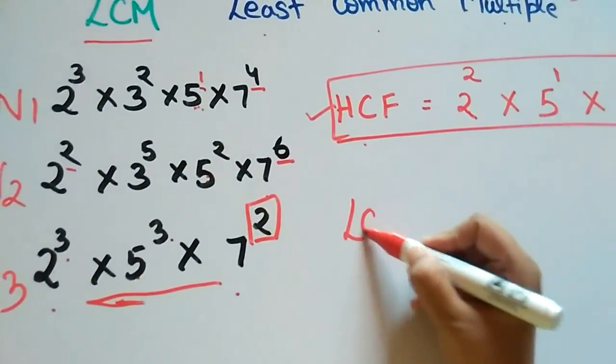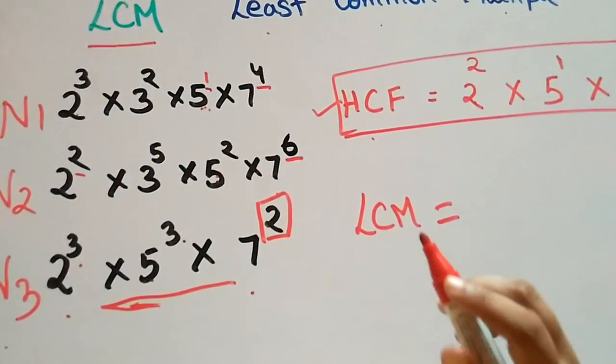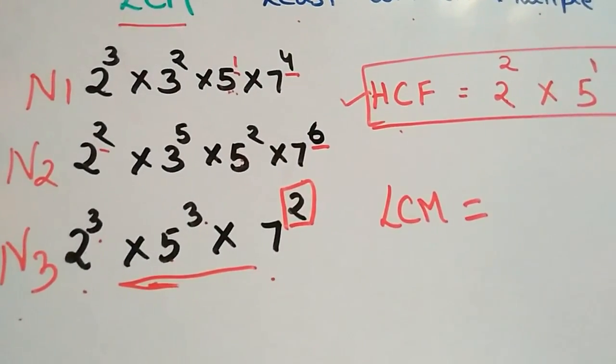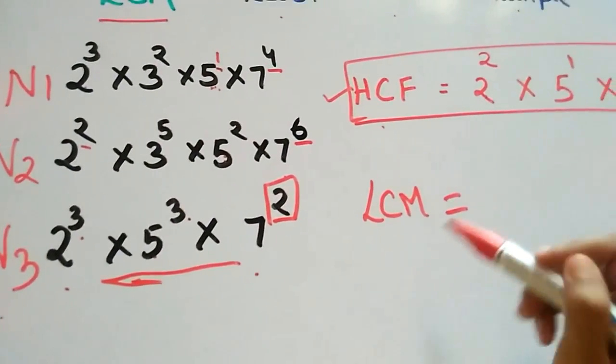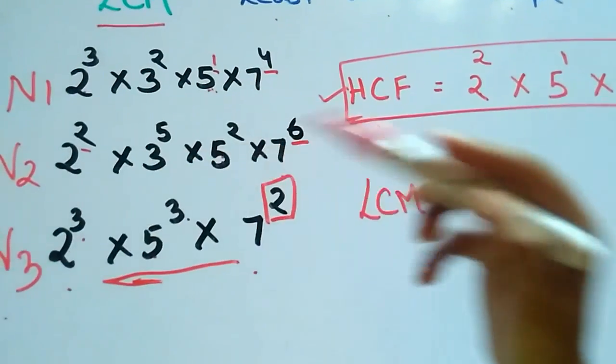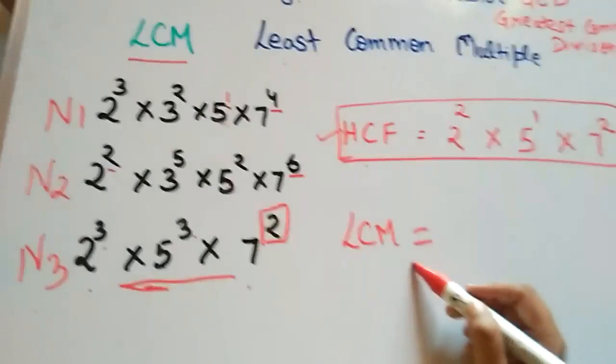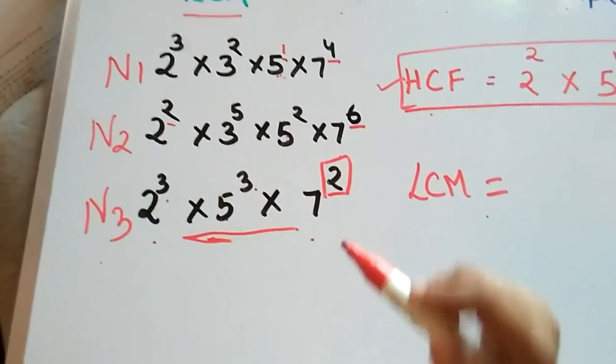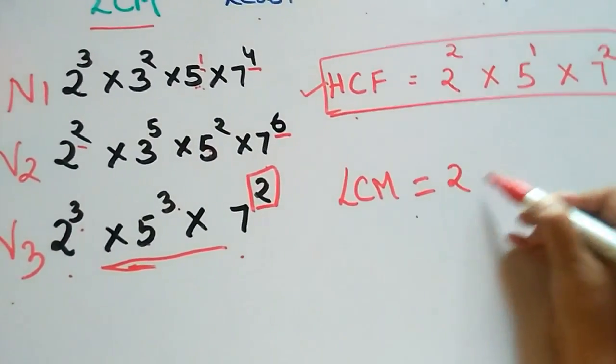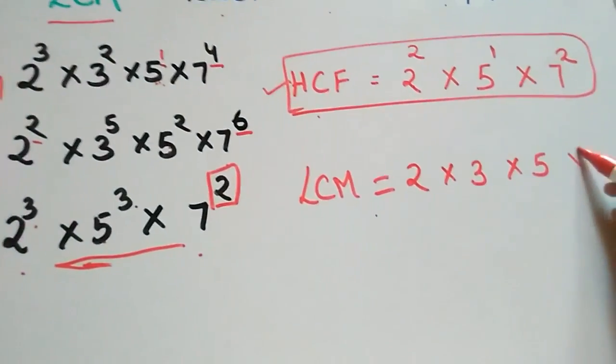Now let's see the LCM. LCM is the least common multiple. It means that all the numbers must divide its LCM. So for LCM, just write all the numbers: 2, 3, 5, and 7.